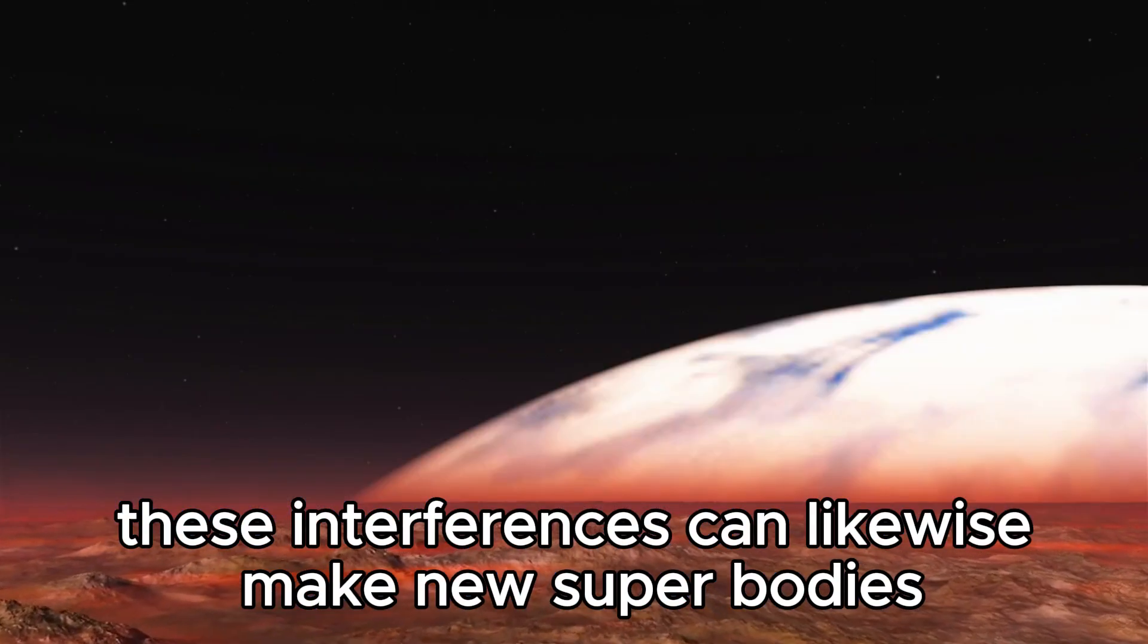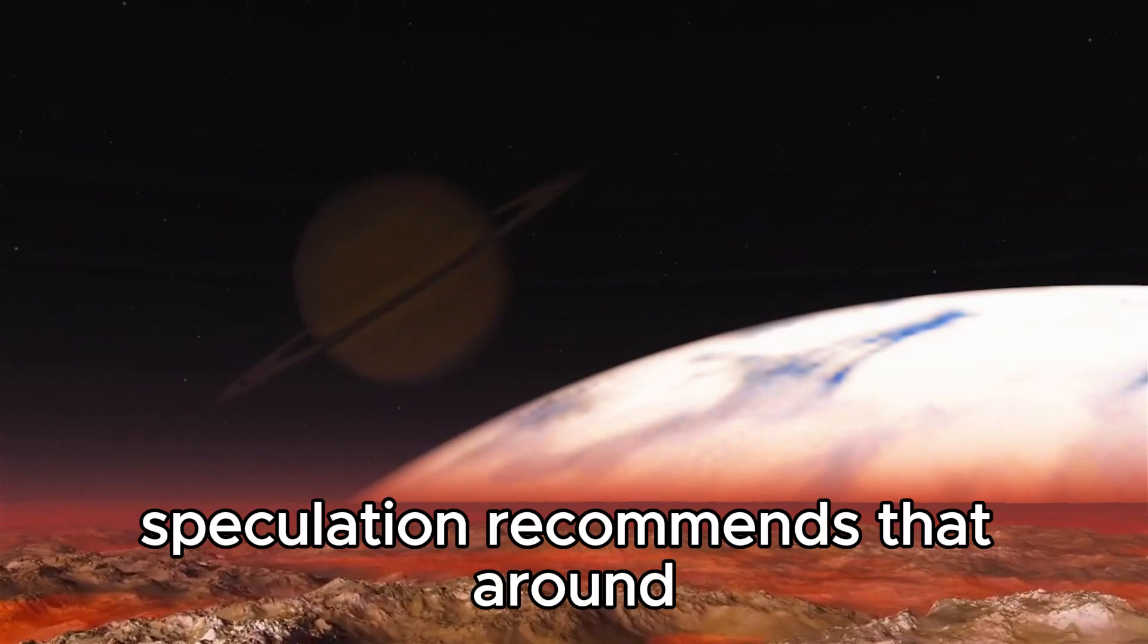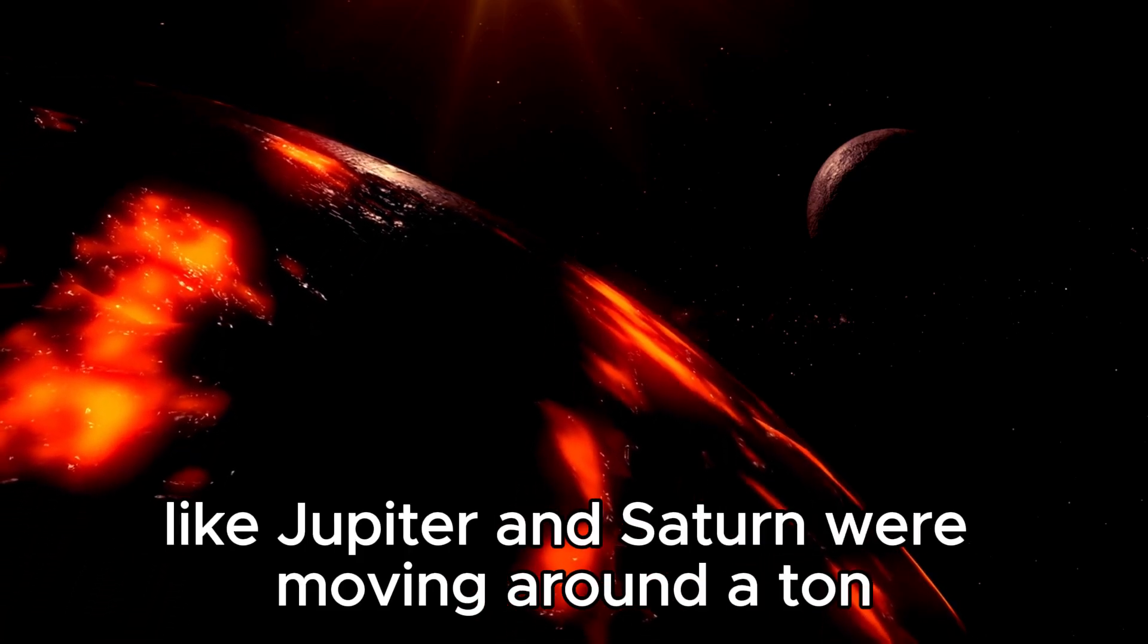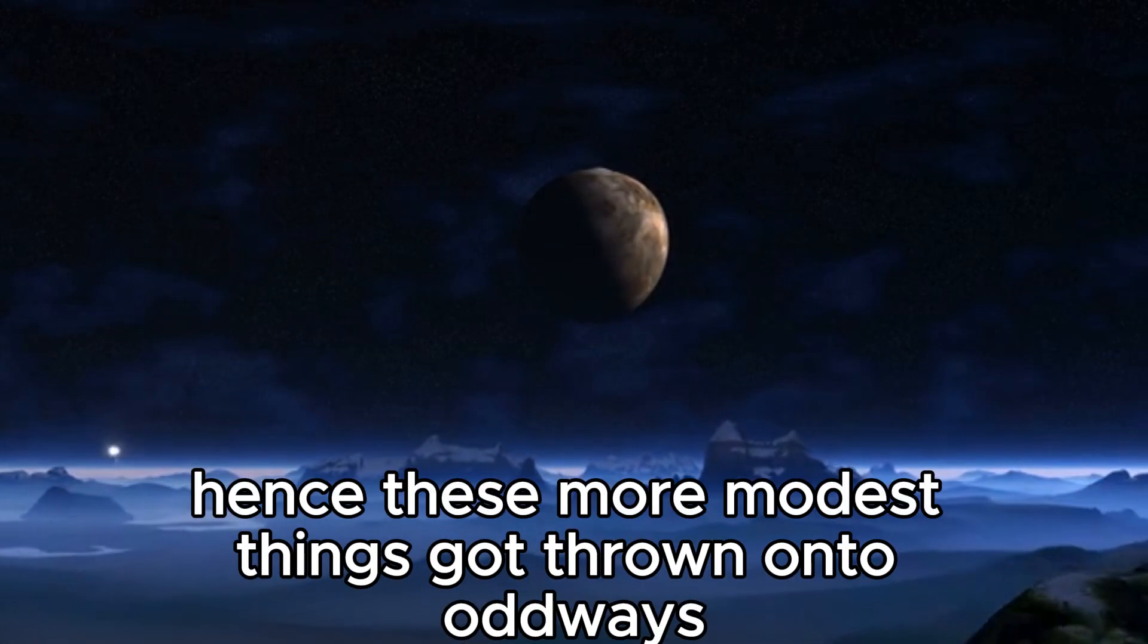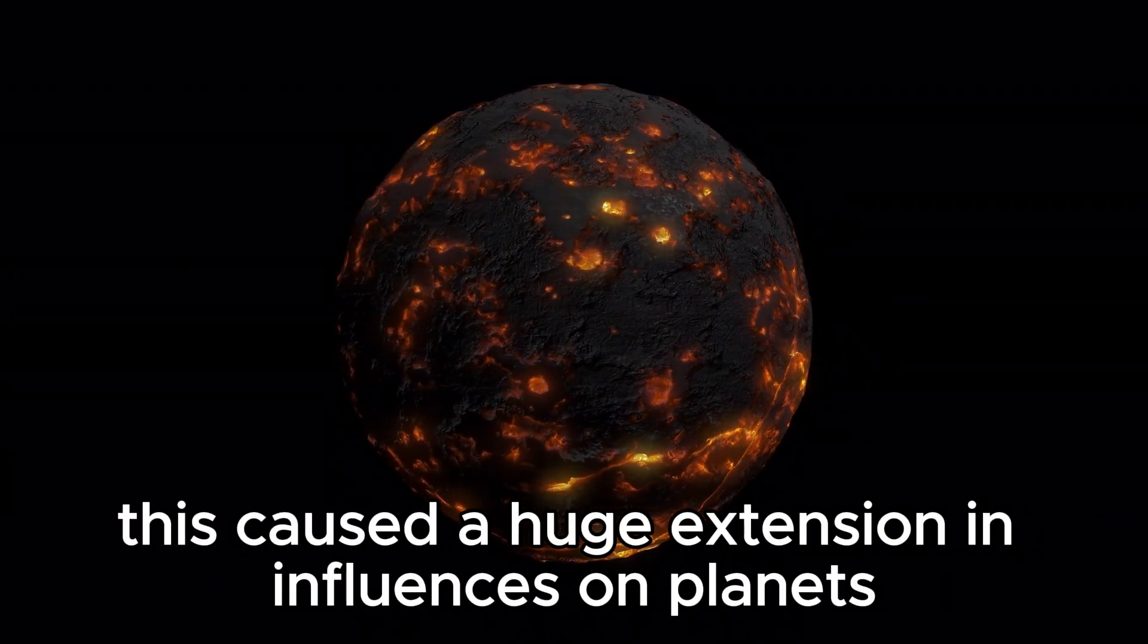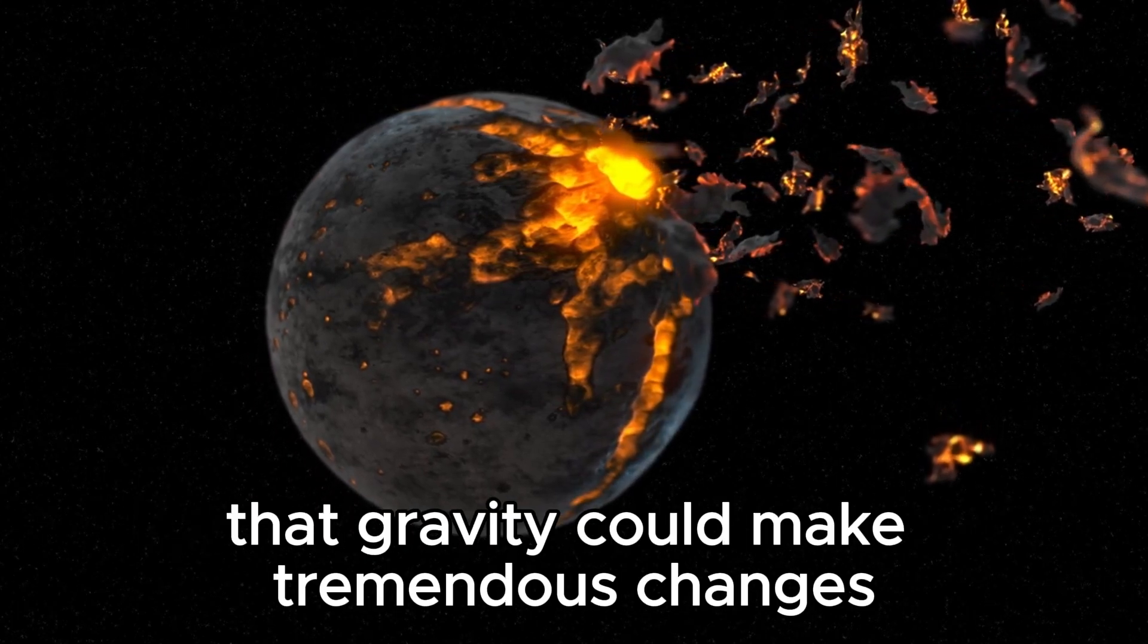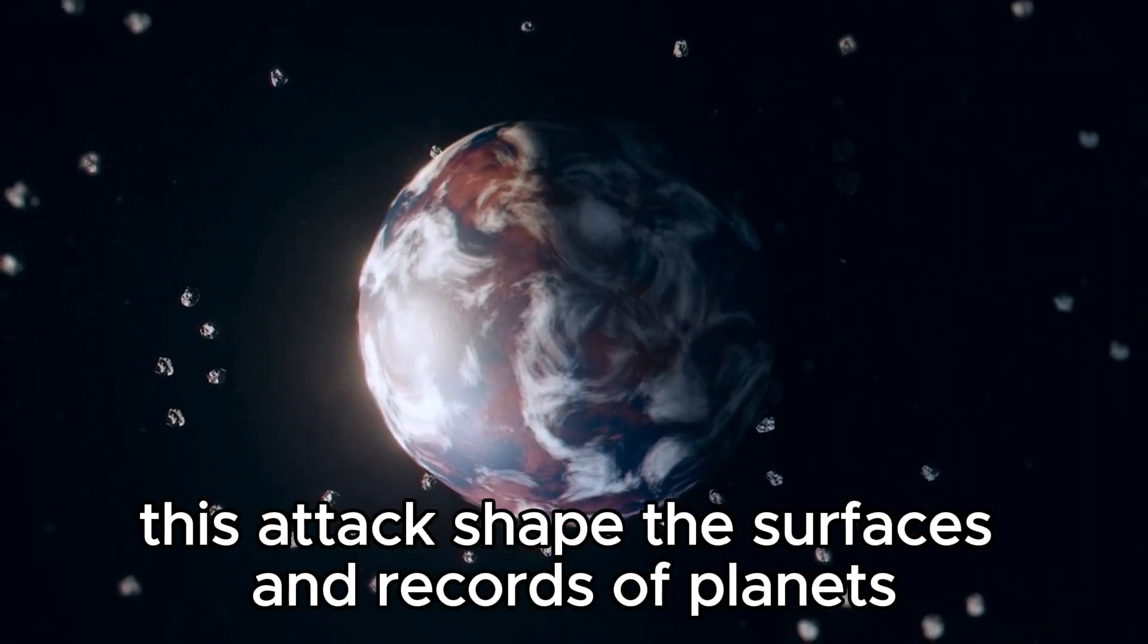The Late Heavy Bombardment hypothesis suggests that around 4 billion years ago, there was a time of expanded collisions involving comets and asteroids. This bombardment is believed to have occurred because the outer planets like Jupiter and Saturn were moving around a lot, which upset the paths of other smaller objects in space. Therefore, these smaller things got thrown onto odd paths, many ending up in the inner part of our solar system. This caused a huge increase in impacts on planets like Earth. While these impacts didn't involve planets colliding directly, they showed the truth that gravity could make enormous changes to how things move in space. This bombardment shaped the surfaces and histories of planets in our solar system and could have even brought water and organic material to Earth.